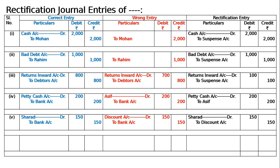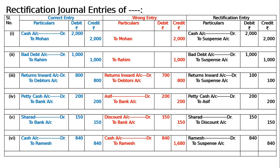Sixth entry: Ramesh's account was credited as 840 twice instead of once. Whatever the transaction — cash to Ramesh, purchases to Ramesh — 840 was credited twice to Ramesh's account. The wrong entry effectively became: Cash account debited to Ramesh, 1680. To rectify, the extra 840 in Ramesh's account must be debited: Ramesh account debited to Suspense account, 840. Being excess amount credited to Ramesh's account, now debited to his account to nullify the excess, and remaining accounts being correct, transferred to suspense account.